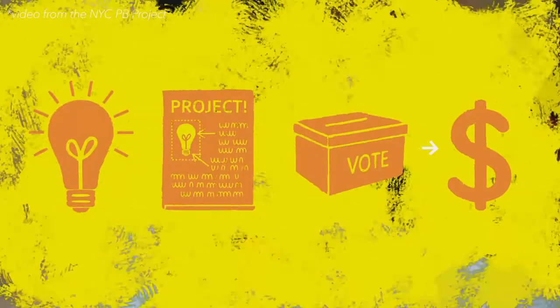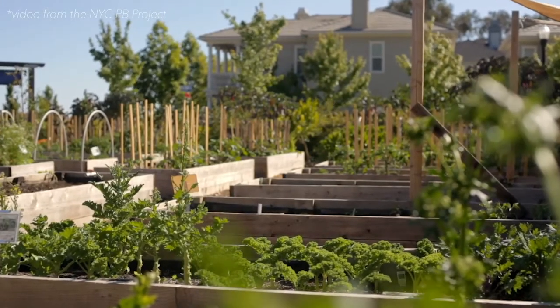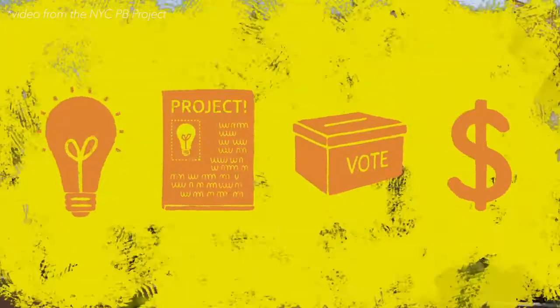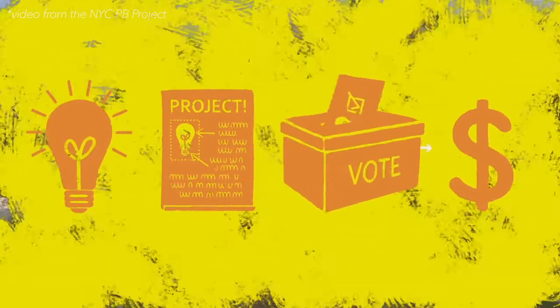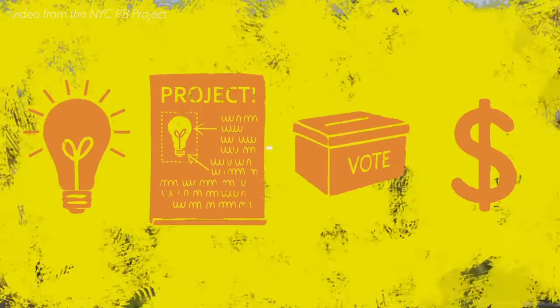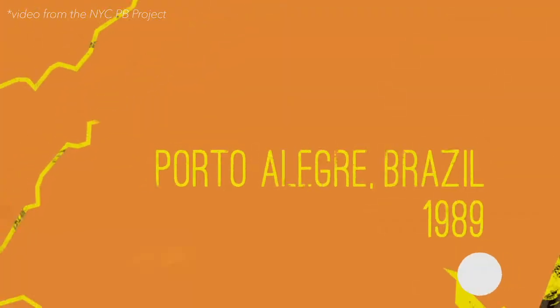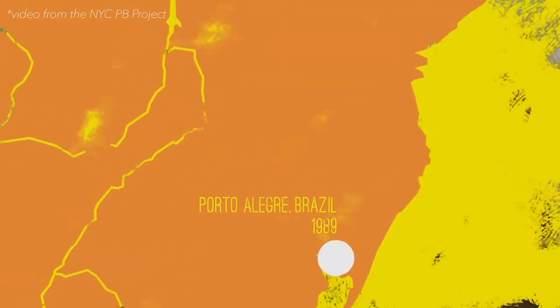The projects with the most votes get funded. The projects are then implemented over the next few years, and the following year the process starts again. People brainstorm new ideas, turn them into new projects, vote on them, and fund more improvements for their community. Participatory budgeting becomes part of the budget process — it becomes a new way of governing.